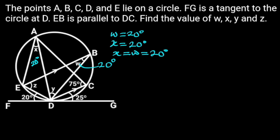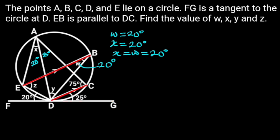Next, to find Y, let's consider chord DC. Notice that chord DC also made an angle of 25 degrees with the tangent, and through the chord an angle is made at point A which is in the alternate segment. From the theorem of angle in the alternate segment, this shows that angle DAC is 25 degrees. Since line EB is parallel to line DC, then angle EBD is equal to angle BDC, that is 20 degrees. This is because both angles are alternate angles, and alternate angles are equal.